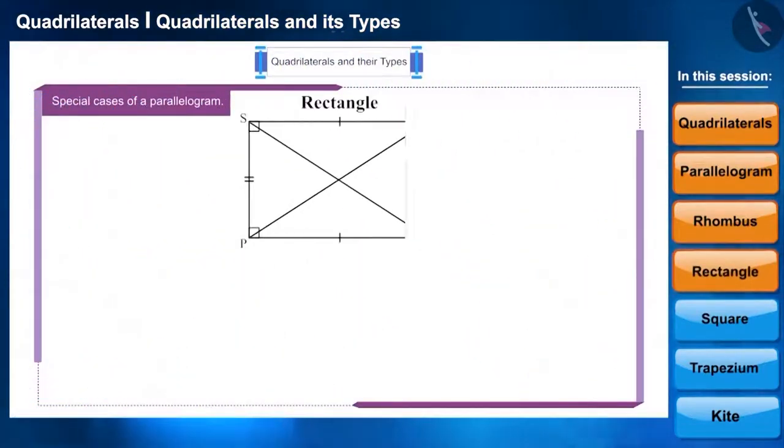Friends, in the previous year, we have learned about rectangle. This is a parallelogram whose all angles are right angles. It also has the properties of a parallelogram, that is, its opposite sides are parallel and equal.